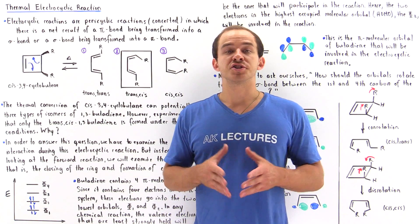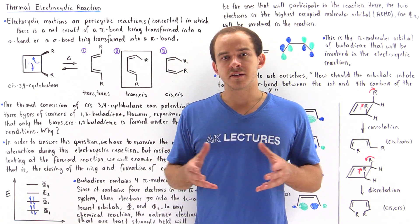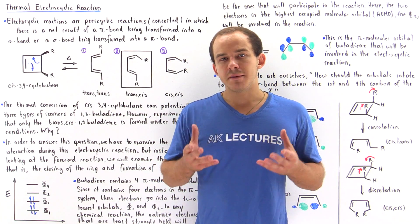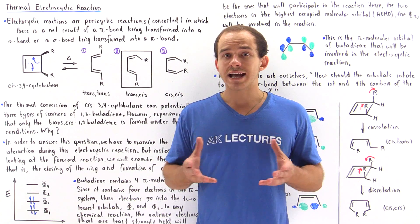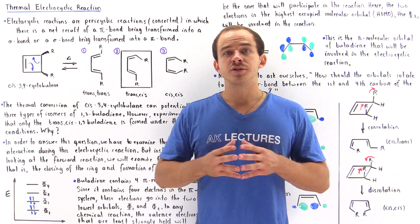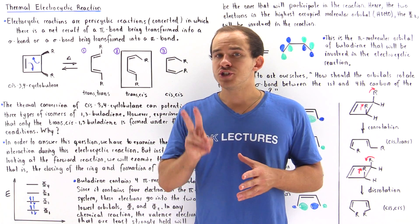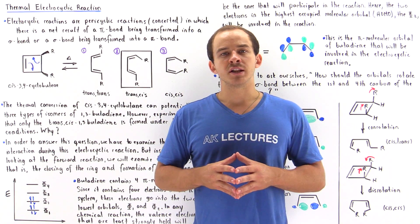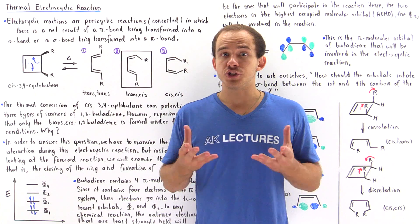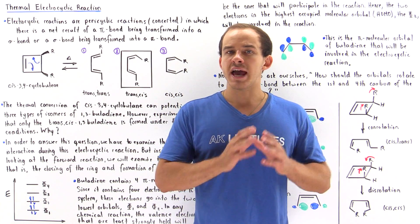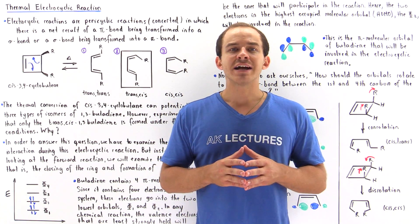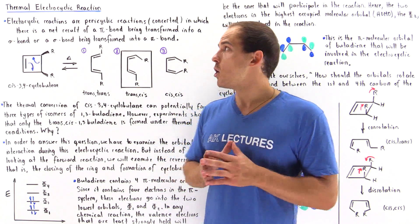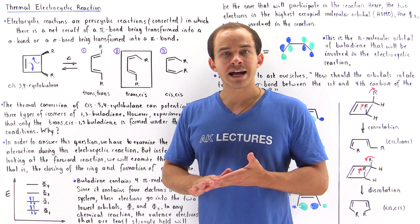Let's begin our discussion on a specific type of pericyclic reaction known as the electrocyclic reaction. Recall that a pericyclic reaction is a concerted reaction in which the transition state is cyclical. There are two types of electrocyclic reactions: thermal electrocyclic reactions, in which the energy source is heat, and photochemical electrocyclic reactions, in which the energy comes from light. In this lecture we're going to focus on the thermal electrocyclic reaction.